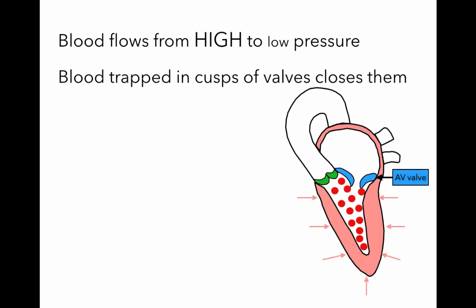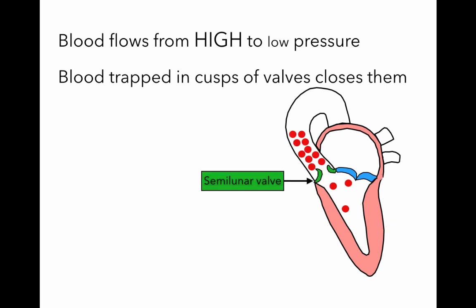When the ventricle contracts, it forces blood up against the AV valves, and the blood gets trapped in the small cusps, causing them to shut. The closing of the atrioventricular valves is the first heart sound — the 'lub' — you hear when listening to a heartbeat. A similar thing happens for the semilunar valves: blood flows from high pressure in the aorta back toward the low-pressure ventricle as it relaxes, becomes trapped in the valve cusps, and they shut. That is the second heart sound — the 'dub.'